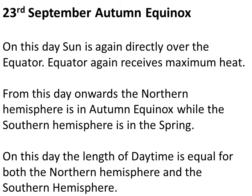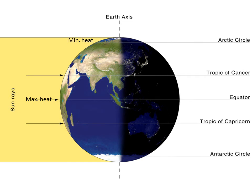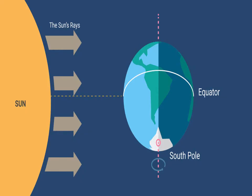Equinox means equal nights — it refers to the day which has exactly 12 hours of day and exactly 12 hours of night. On 23rd September, the sun is again over the equator, and equatorial regions receive maximum heat. From this day onwards, the northern hemisphere is in Autumn Equinox while the southern hemisphere is in Spring Equinox. In short, on 21st March and on 23rd September, direct rays of the sun fall on the equator. At this position, neither of the poles are tilted towards the sun, and as a result the entire earth experiences equal day and equal night. This phenomenon is known as Equinox.